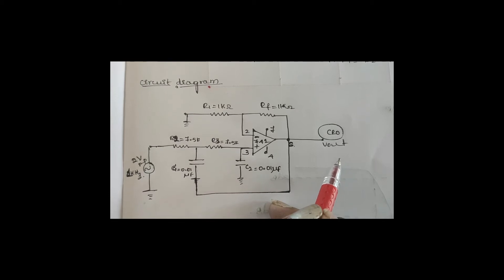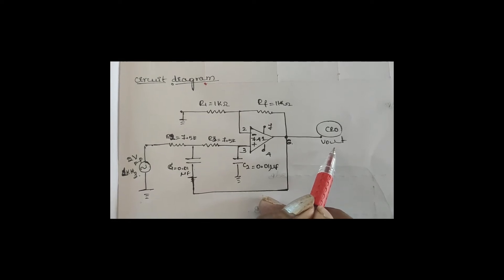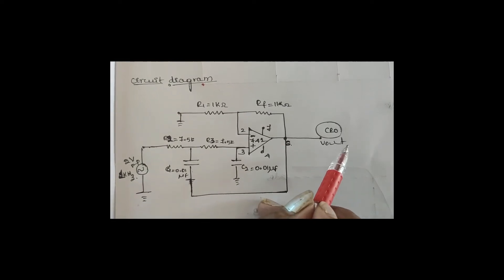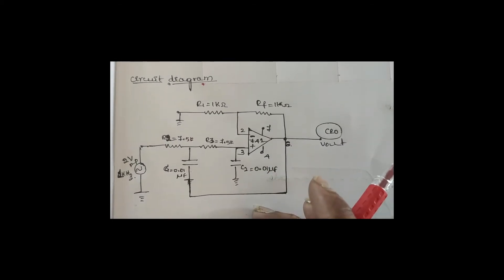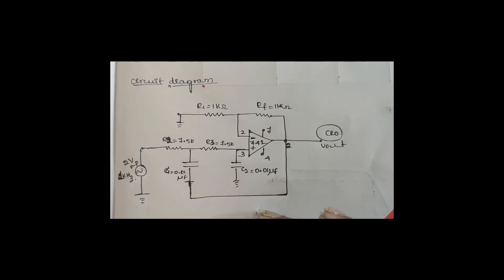The output voltage amplitude remains the same as the input voltage — 2 volts — until it reaches the cutoff frequency of 2kHz. Once it reaches 2kHz or near 2kHz, you can observe a reduction in amplitude. The amplitude is reduced with increasing frequency in terms of kilohertz.